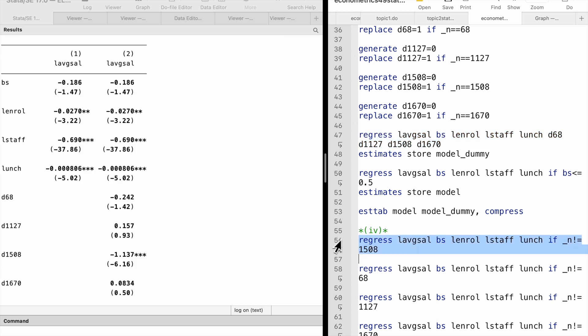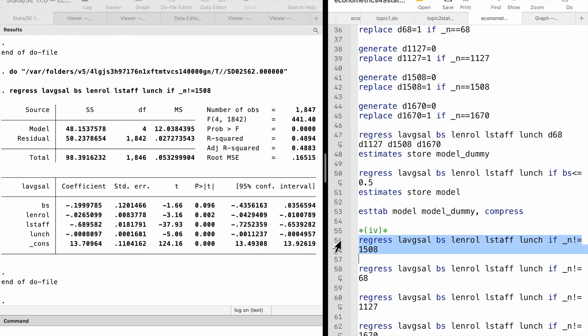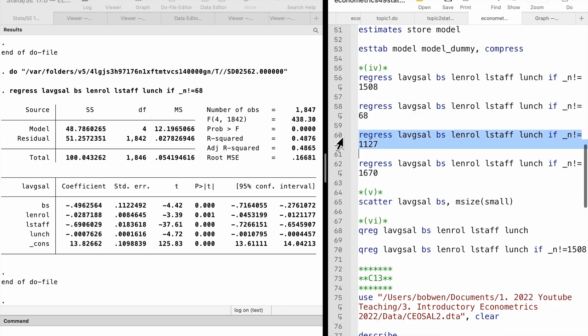In part 4, we verify that the data point D1508 has a larger influence on the OLS estimates. The estimate on BS is minus 0.2 without it, but minus 0.5 with it. For the other three data points, the estimates on BS are similar with or without the points.